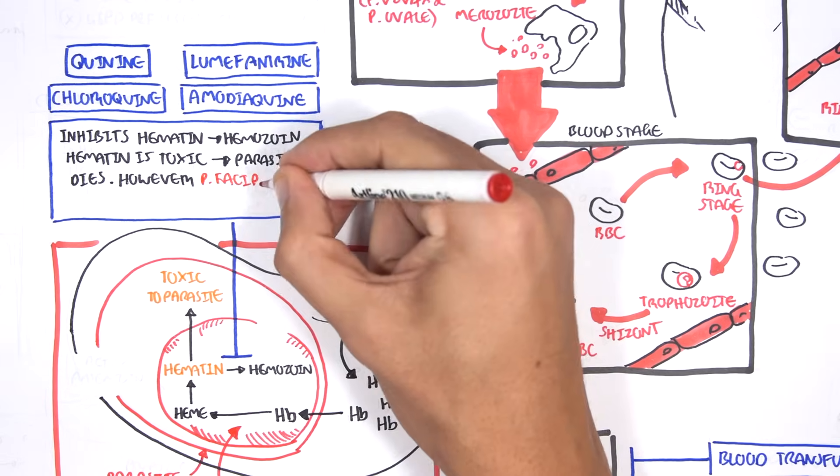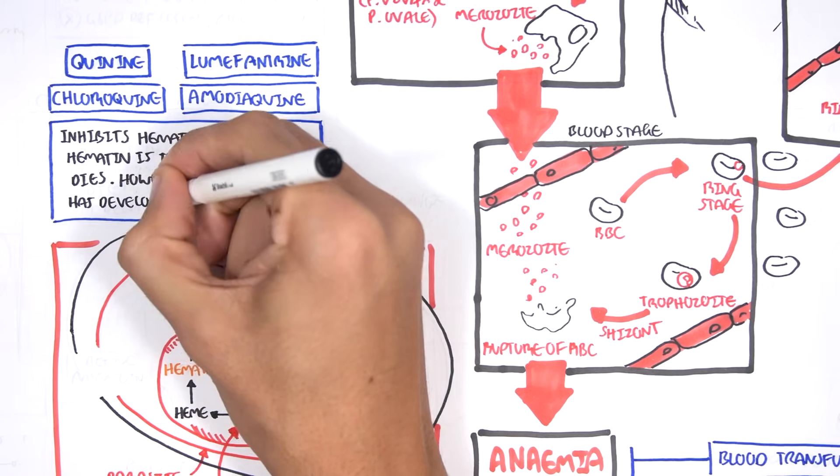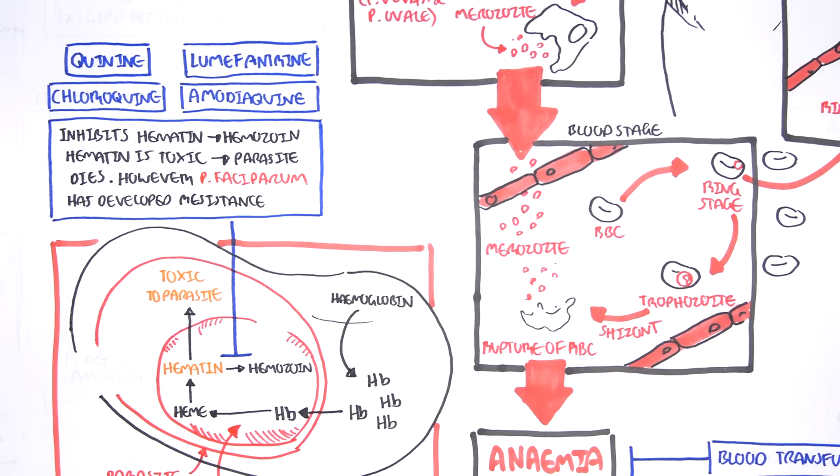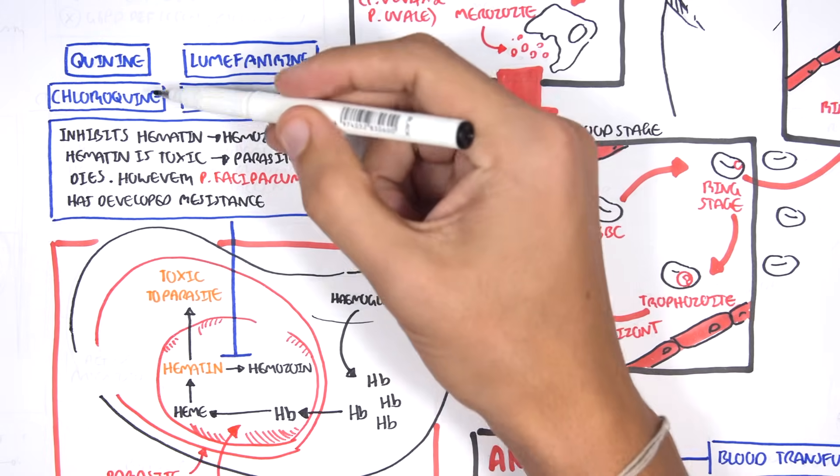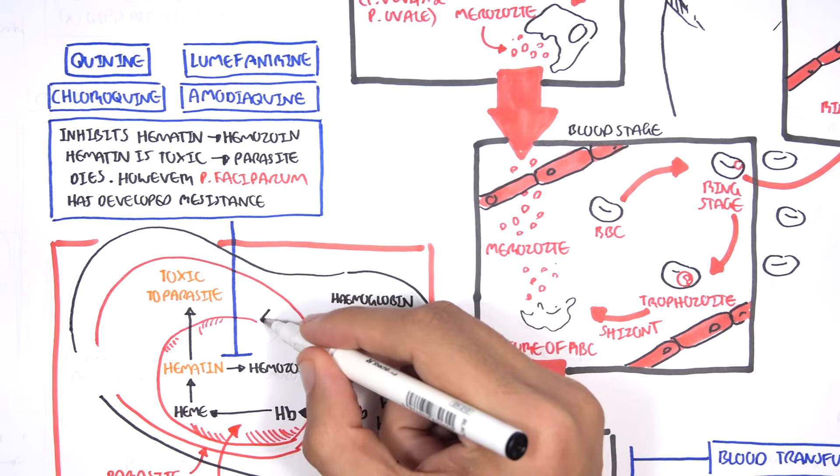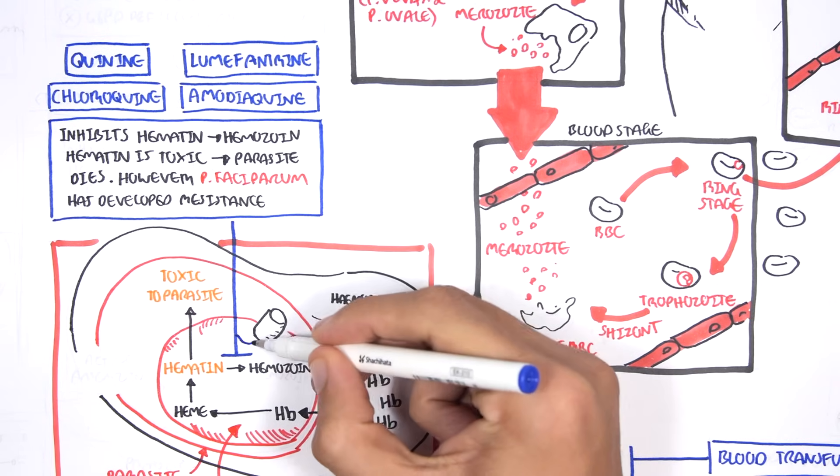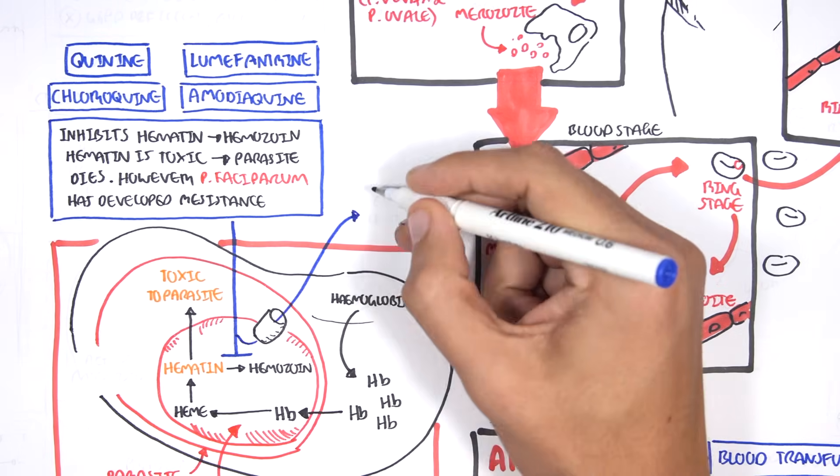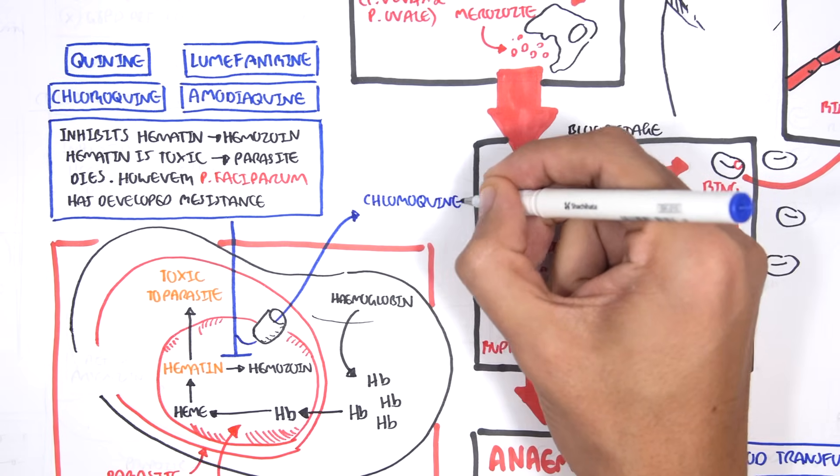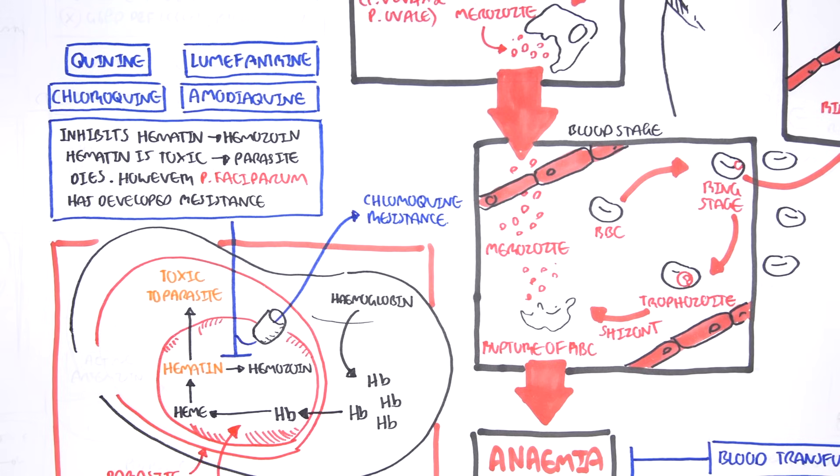However, there is a particular strain of the parasite called the Plasmodium falciparum who has been able to develop resistance against chloroquine. What happens is that the parasite have been able to develop a pump. This pump pumps out the drug from the vacuole so that the chloroquine has no effect and the hematin can be successfully converted to hemozoin by the parasite. This resistance is known as chloroquine resistance. The pump specifically removes the chloroquine drug.